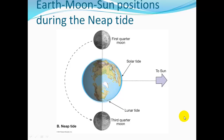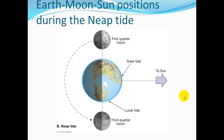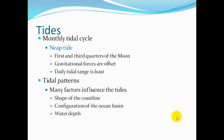Neap tides occur during the first and third quarter moons, when the Moon's orbital plane is perpendicular to where the Sun is. In this configuration, gravitational forces do not add together, resulting in lower high tides and higher low tides. The daily tidal range is at its least during neap tides.